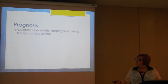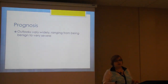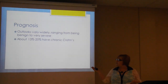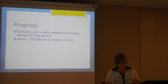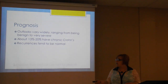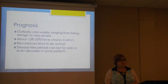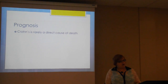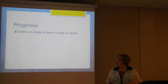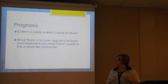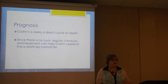The prognosis for patients varies widely since Crohn's can be very mild or incredibly severe. At the extreme, some patients will only experience one episode in their life, while others live with it constantly — about 13 to 20% have chronic Crohn's. Recurrences and flare-ups are normal, so regular checkups are important, but disease-free periods once in remission can last from a year to decades. Crohn's is rarely a direct cause of death, and with regular checkups and treatment, patients can live a relatively normal life.